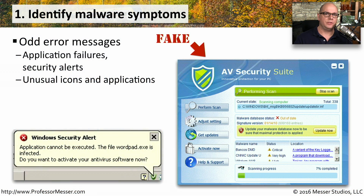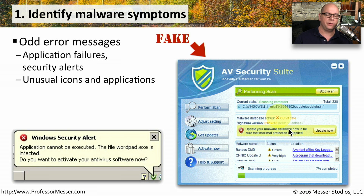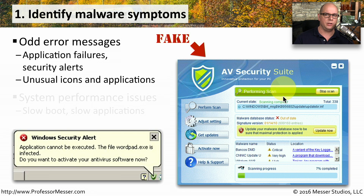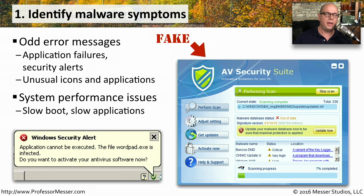Sometimes it's very obvious when you might have a malware infection. There might be weird error messages on your screen, odd security alerts, or weird applications that have been installed. Or it may be something where your system is simply acting a little slow and sluggish, not performing the way you would expect, and you might think there's something else running under the surface causing this particular performance problem.